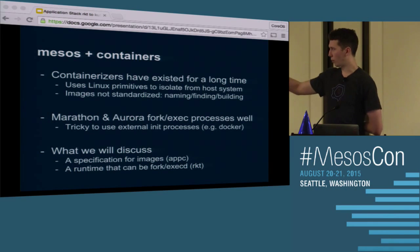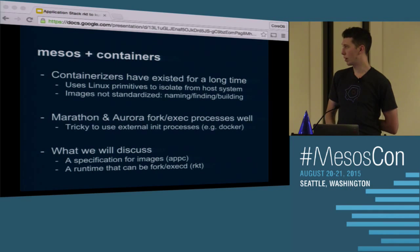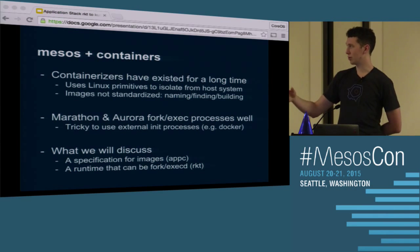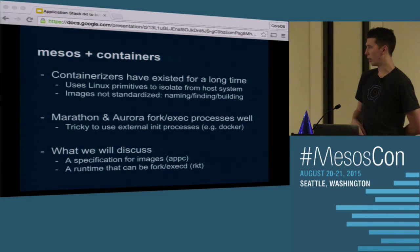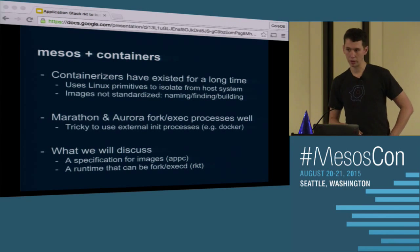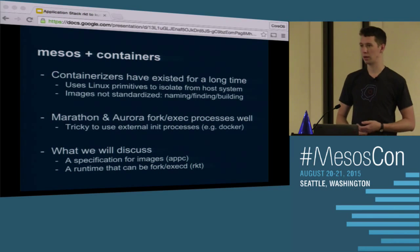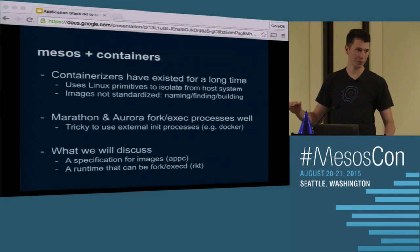What I want to discuss is a specification to make the naming, finding, and building of images something that can be shared between lots of runtimes — imagine Docker, the Mesos containerizer, Rocket, and others sharing a single image format. And then also Rocket itself, which is a runtime that can be forked and exec'd, which is useful if you've already built something that knows how to fork and exec. I've not used Mesos in production; I'm going from my understanding of the system.